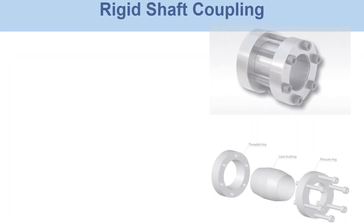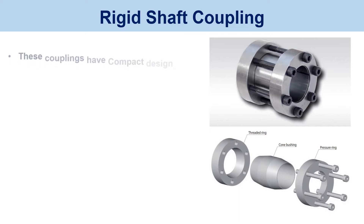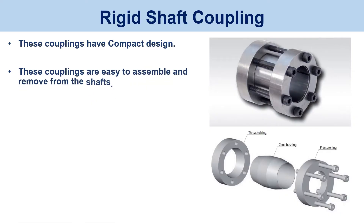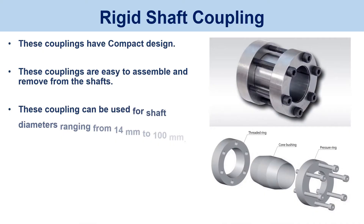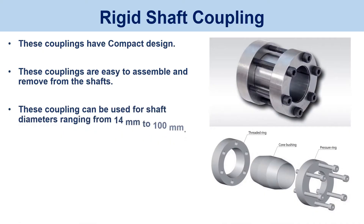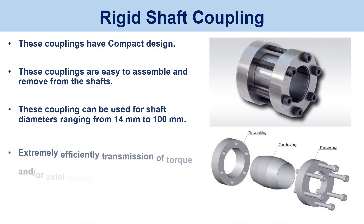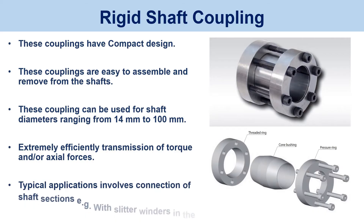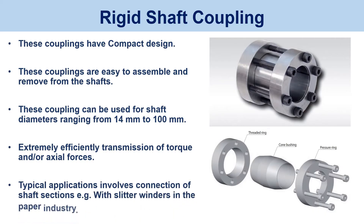Rigid shaft coupling / Flange coupling. These couplings have a compact design and are easy to assemble and remove from the shafts. They can be used for shaft diameters ranging from 14mm to 100mm, and provide extremely efficient transmission of torque and axial forces. Typical applications involve connection of shaft sections, e.g., with slitter winders in the paper industry.